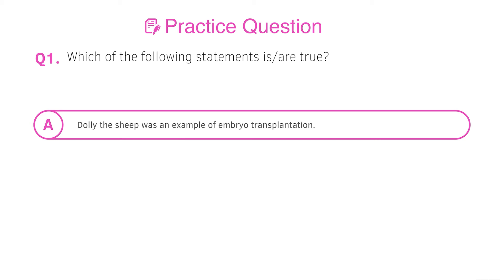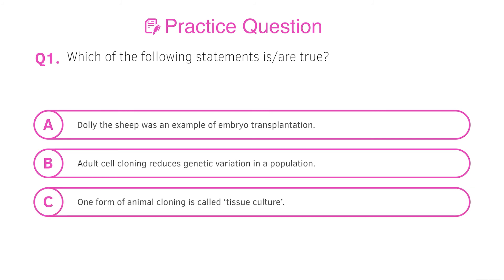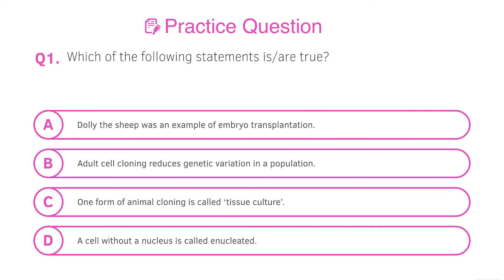Now let's have a look at some practice questions. I'll go through these statements — you can pause the video, have a go, and then we'll go through the answers. Statement A: Dolly the sheep was an example of embryo transplantation. Statement B: Adult cell cloning reduces genetic variation in the population. Statement C: One form of animal cloning is called tissue culture. Statement D: A cell without a nucleus is called enucleated. Pause the video and have a go.